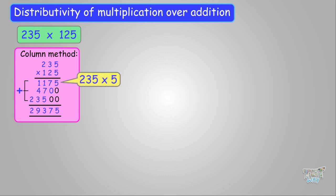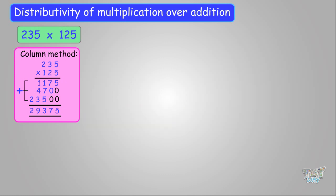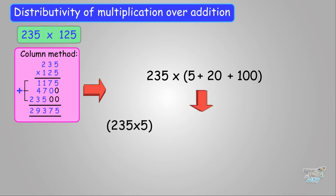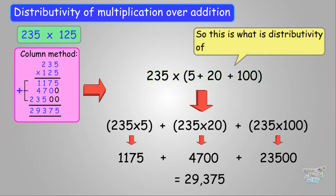So what do we do in this column method of multiplication? We multiply 235 with 5, then multiply 235 with 20, and then multiply 235 with 100, and then we add the three products. To sum it all up, we multiply 235 by 5 plus 20 plus 100 — as in 125 — by multiplying 235 with 5, 20, and 100 separately and then adding the products. So from these two equations, 235 times 5 plus 235 times 20 plus 235 times 100 is the same as 235 times (5 plus 20 plus 100). This is the Distributive Property of Multiplication over Addition.